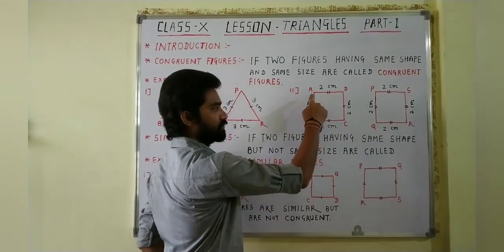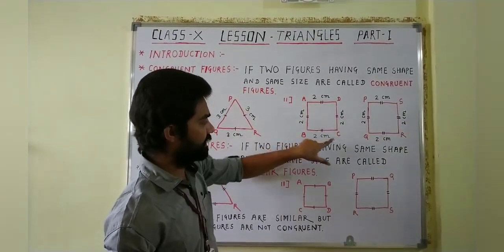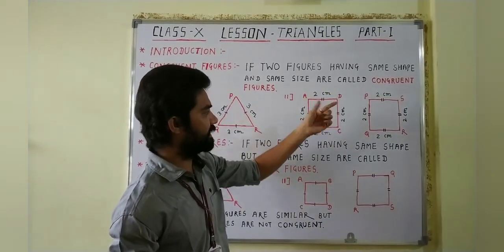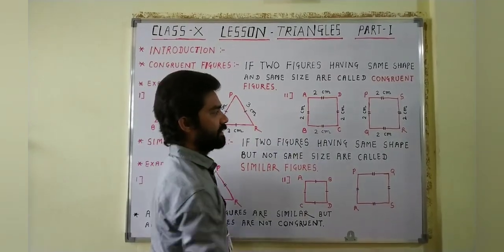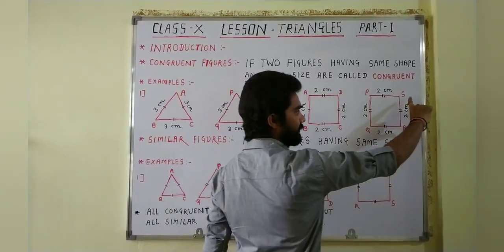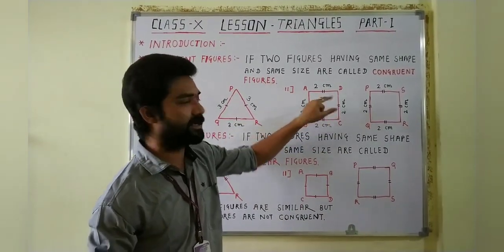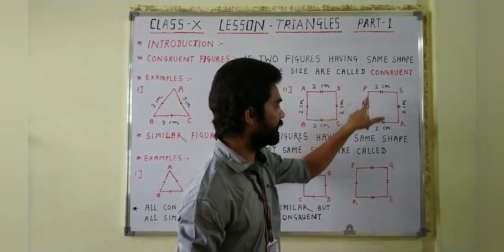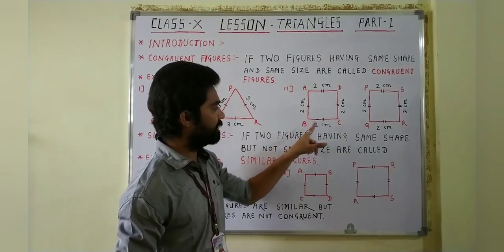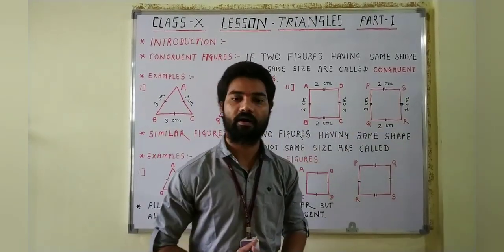Now see the second example. Here are two squares: square ABCD and square PQRS. In square ABCD, AB = 2 cm, BC = 2 cm, CD = 2 cm, and AD = 2 cm. Similarly, in square PQRS, all sides equal 2 cm. All four sides of square ABCD are equal to all four sides of square PQRS. It means square PQRS exactly overlaps with square ABCD. That's why squares ABCD and PQRS are also congruent.